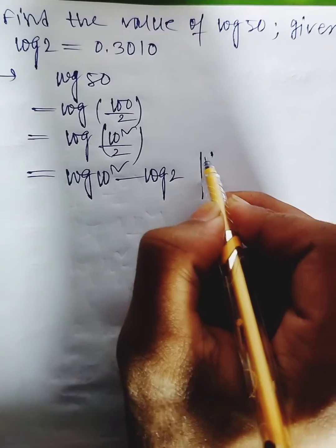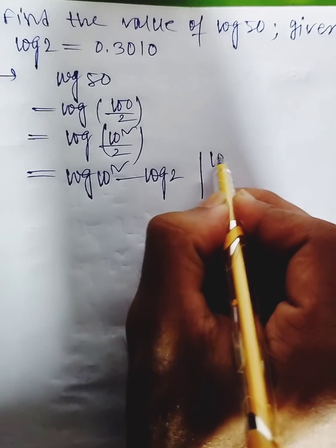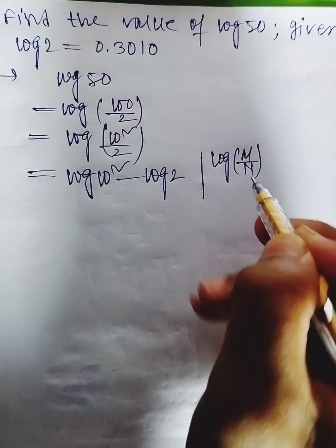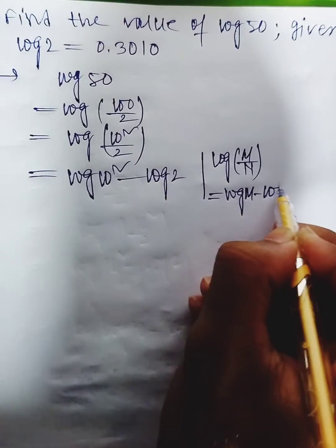We can write division of logs as subtraction of logs. Log m divided by n equals log m minus log n.